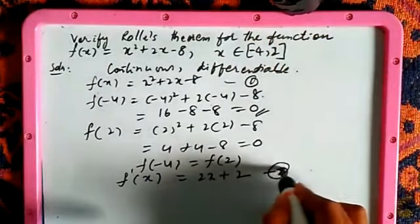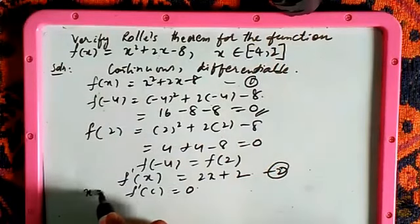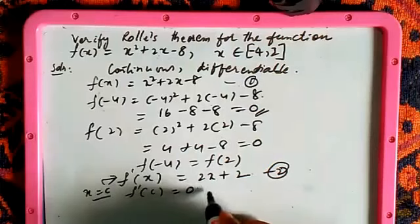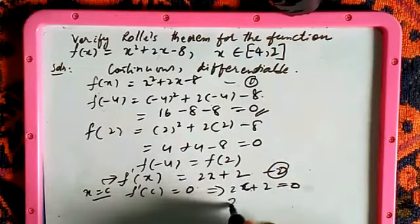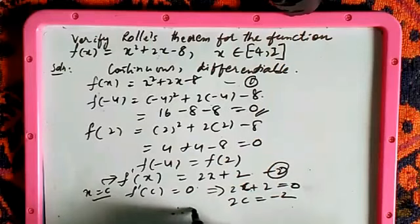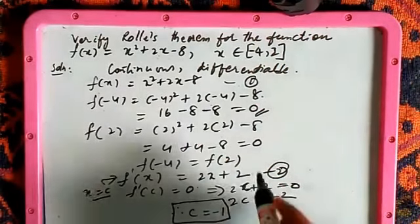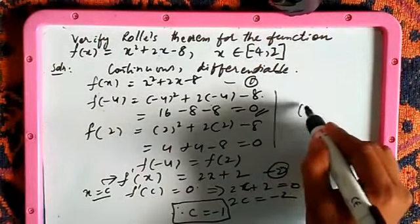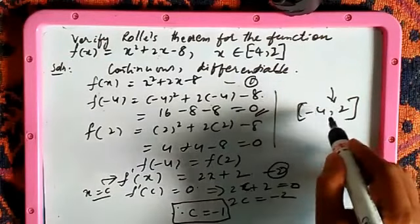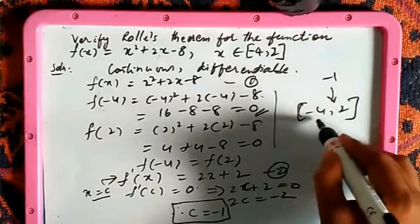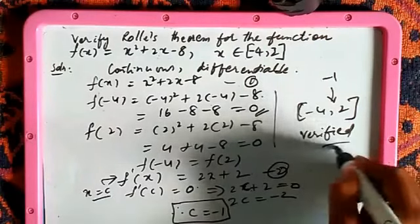Now put f'(c) = 0, which means substitute x = c in the equation: 2c + 2 = 0, so 2c = -2, therefore c = -1. We got c = -1, which belongs to the open interval (-4, 2). Since c = -1 lies between -4 and 2, Rolle's theorem is hereby verified.